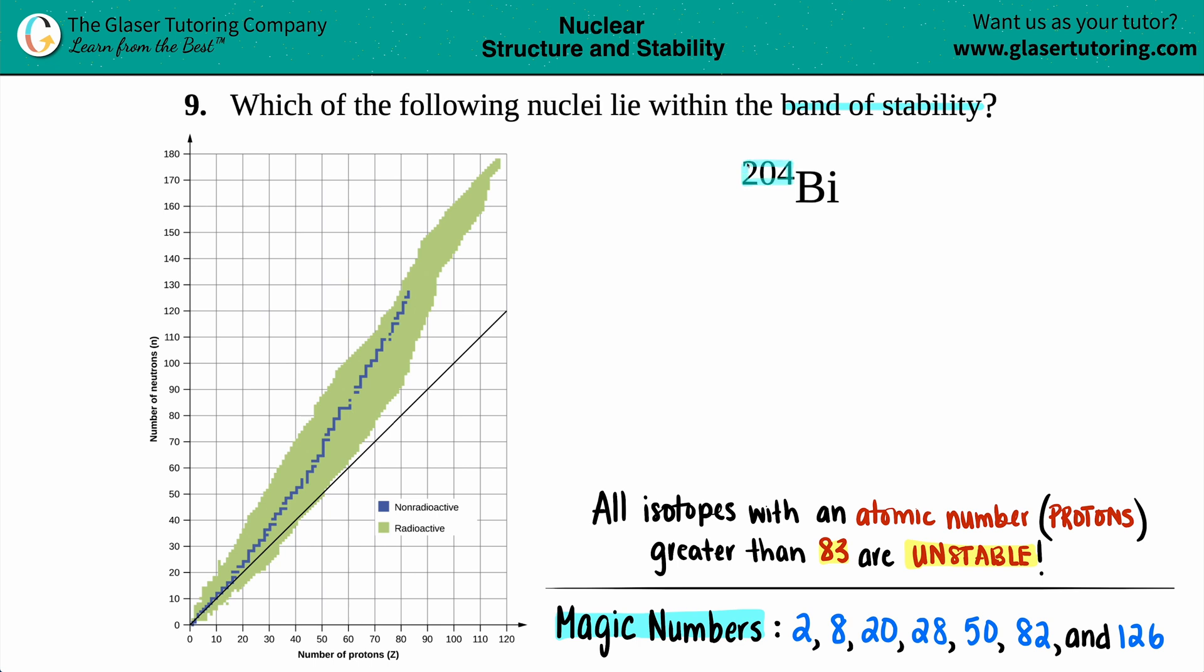They give us a top number here, 204. This top number represents the number of protons plus the neutrons because that is the atomic mass. But there's a missing bottom number, but that's okay because we can look on the periodic table to find out the atomic number. The atomic number is special for each individual element and is only the protons.